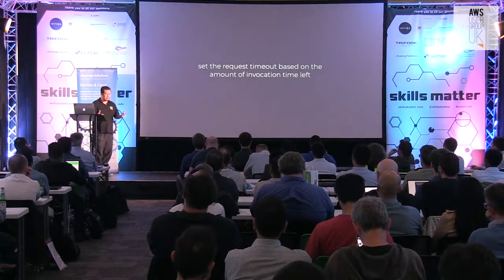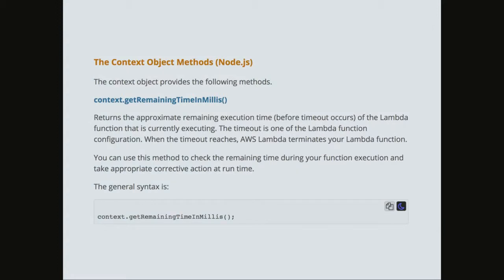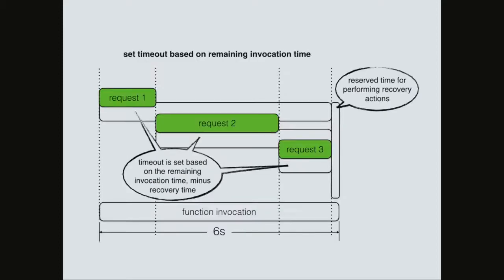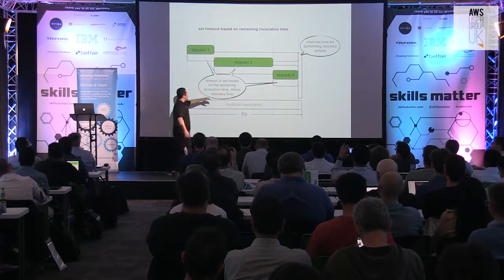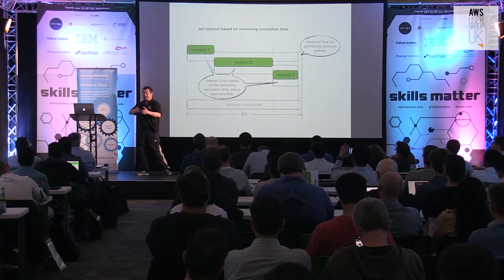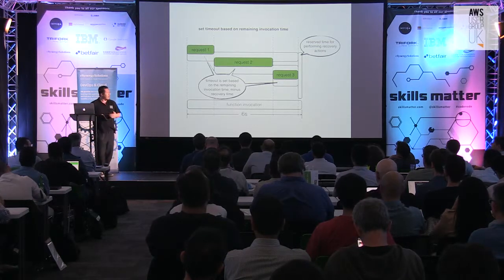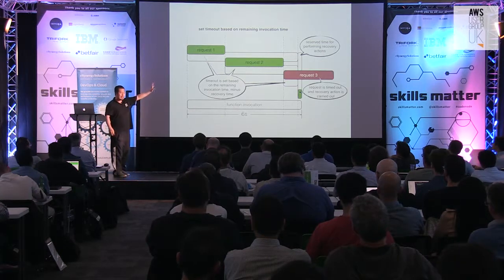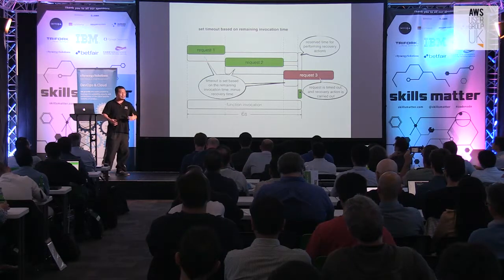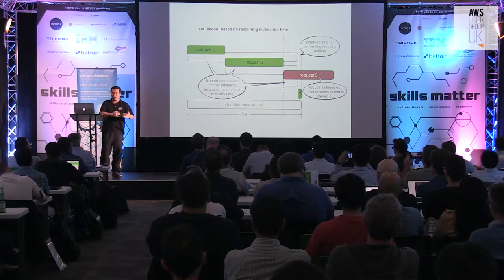Instead, what I propose is that we adjust the timeout we use for HTTP requests based on the actual amount of invocation time we have left, which is available through the context object — one of the arguments your function is invoked with. The scheme is: always leave a little bit of time at the end for recovery steps if something fails, but otherwise every single request is given as much time as is left in the current invocation.